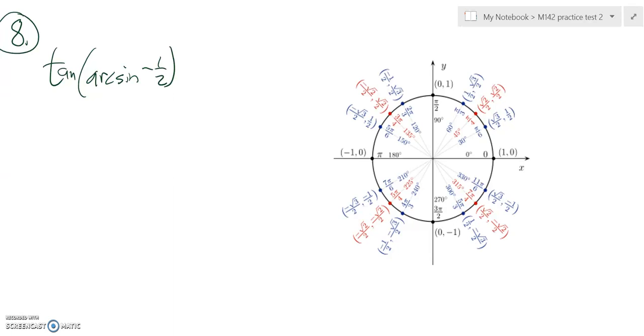This is Math 142, Practice Test 2, problem number 8, and we're supposed to find the tangent of the arcsine of negative one-half.